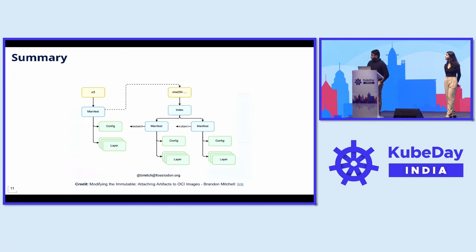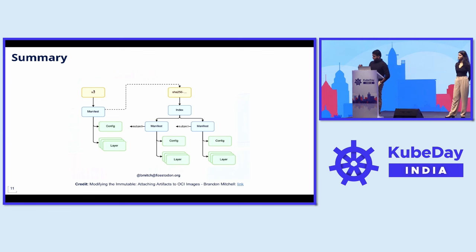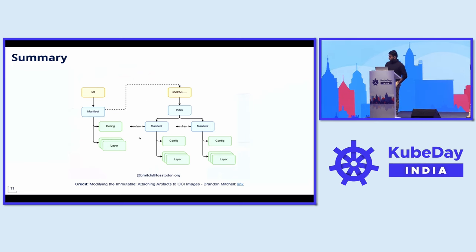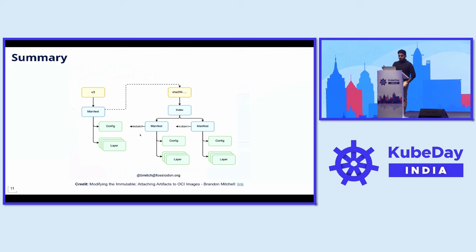To summarize what we discussed: on the left side, we have the tag which points to the manifest. The manifest has a config and multiple layers. On the right, we have all the referrers that are pointing to that image. This explains how container images work and the contents of a container image.